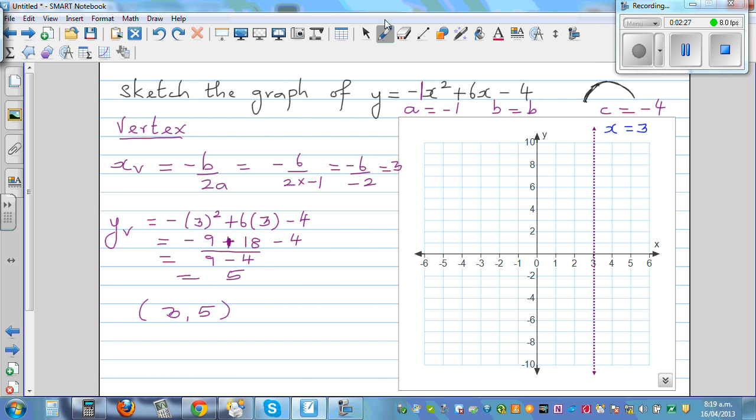Let's plot the point 3 comma 5. 3 comma 5 is the vertex. Now from the vertex, it's an upside down parabola. You're going to go one across and one down. Because it's a minus, that means you're going one down. If you go one across from the vertex, it'll go one down.